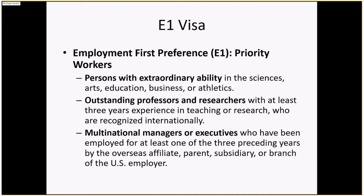Employment first preference E1 visas are for priority workers: persons with extraordinary abilities in sciences, arts, education, business, and athletics; outstanding professors and researchers with at least three years of experience in teaching or research who are recognized internationally; and multinational managers or executives employed for at least one of the three preceding years by an overseas affiliate, parent, subsidiary, or branch of a US employer.